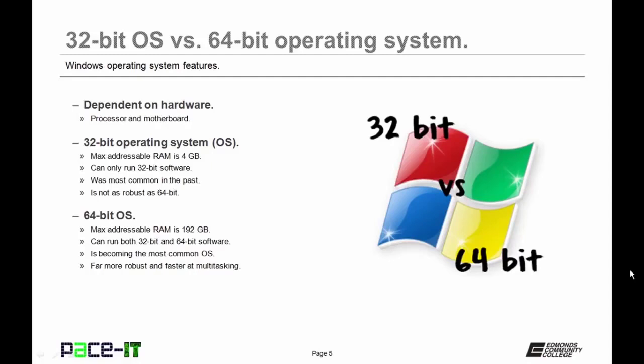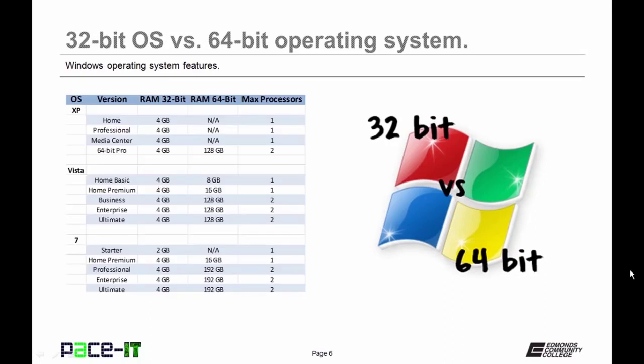64-bit operating systems allow you to address a maximum of 192 gigabytes of RAM. You can run both 32-bit and 64-bit software. It is becoming more and more common as we move into the future, and it's far more robust with much faster multitasking than 32-bit operating systems. Here's a slide that shows how much RAM each version of Windows will address, and also how many processors.